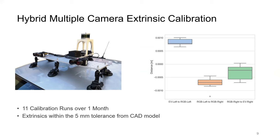The box plot shows the deviation of the estimated translation by our proposed framework from the CAD model. The errors are well within the limit of the CAD model accuracy of 5 mm, which shows that the extrinsic calibration is accurate within the tolerance of the CAD model.